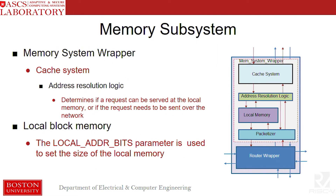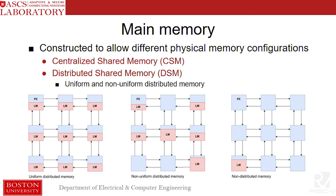The last-level cache is interfaced with the memory interface module, which has the address resolution logic for a distributed shared memory situation. The address resolution logic determines whether a memory request from the processor can be served at the local memory, or whether it should be sent out to the network on chip to be served by a remote node. The size of the main memory can be changed on a per-node basis, allowing several different kinds of memory configurations: centralized shared memory, or a distributed shared memory system — uniform or non-uniform.